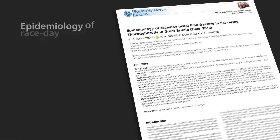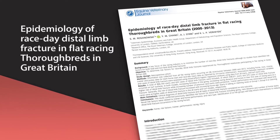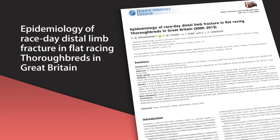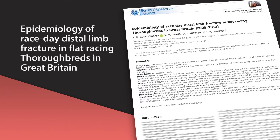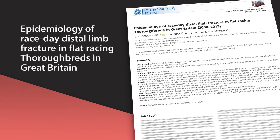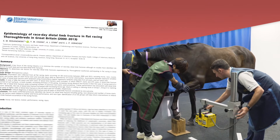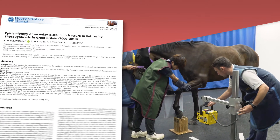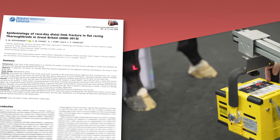Many of the examples will come from this article: 'Epidemiology of race day distal limb fracture in flat racing thoroughbreds in Great Britain.' To recap, the topic is a kind of injury which can occur in racehorses — fractures in the distal limb.